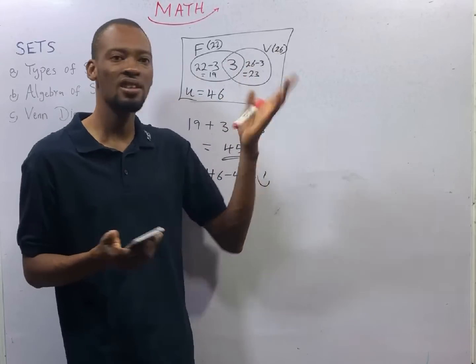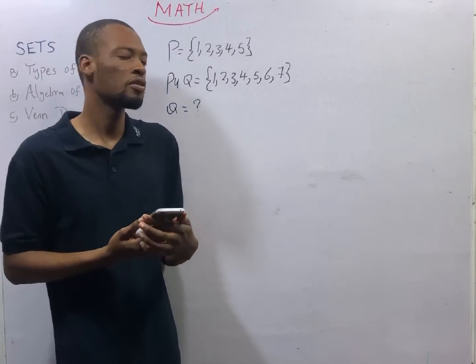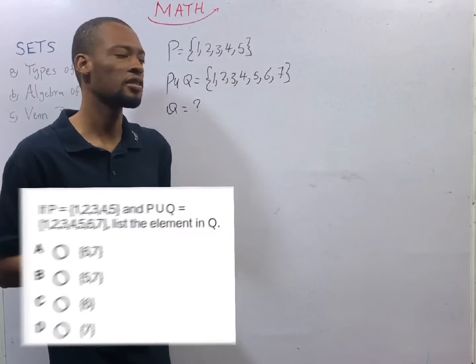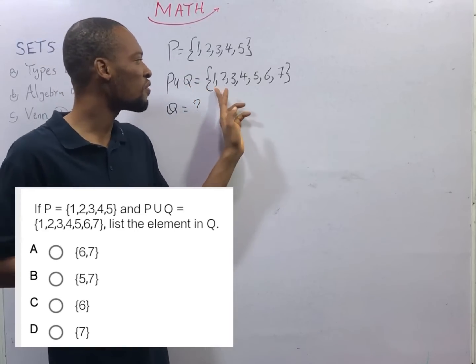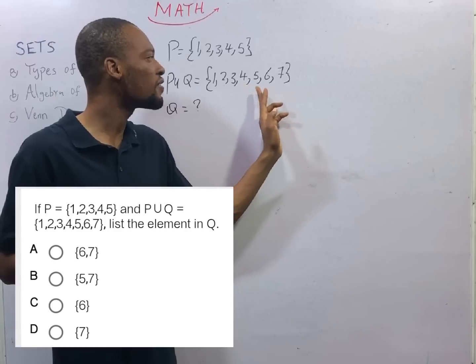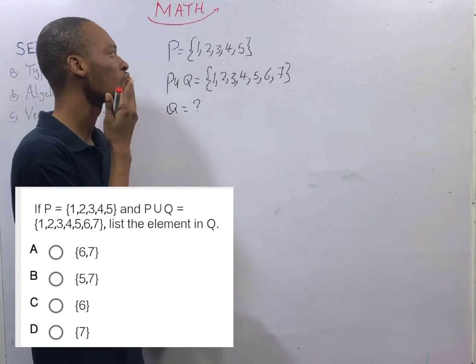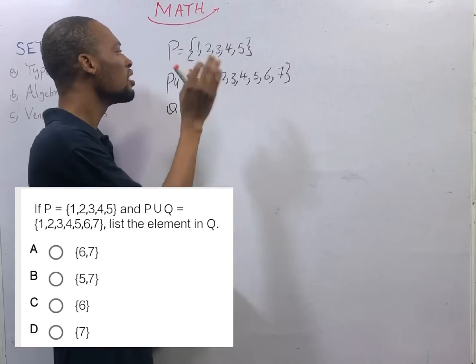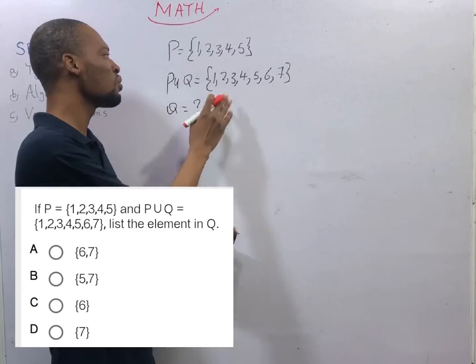P is a set of 1, 2, 3, 4, and 5. P union Q is a set of 1, 2, 3, 4, 5, 6, and 7. We are asked to look for Q. This is P. If you match P and Q, you will get this.